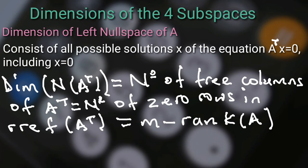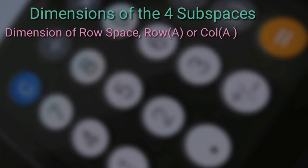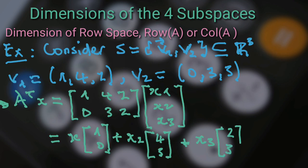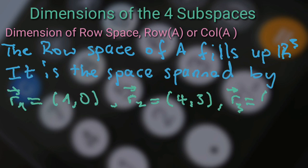The left null space consists of all possible solutions x of the equation A transpose times x equals 0, including 0. The dimension of the left null space of A equals the number of free columns of A transpose, which equals the number of zero rows in the reduced row echelon form of A transpose, which equals M minus rank A. The row space consists of all possible vectors A transpose times x, representing the linear combination of the rows of A. This implies the row space of A fills up R cubed. It is the space spanned by R1, R2, and R3.